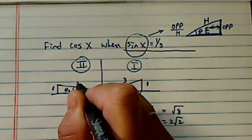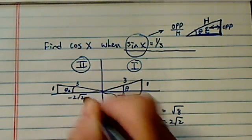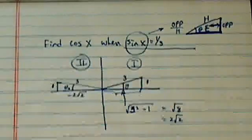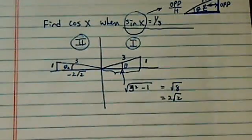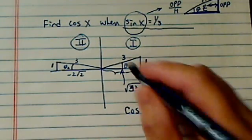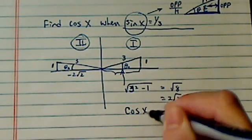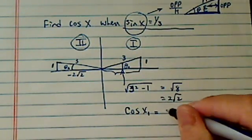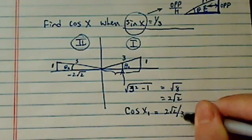Now here is 1 and here is 3. However, this one is negative 2 radical 2 over 2, and this does make a difference. Because now cosine of theta 1, or take it x1, is equal to 2 radical 2 over 3.